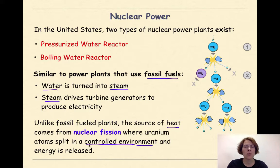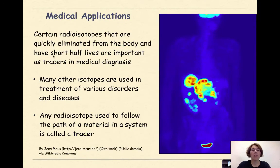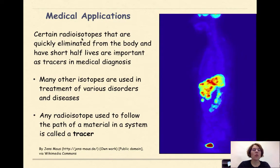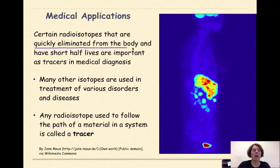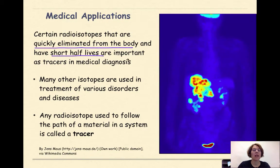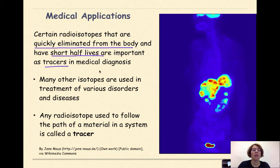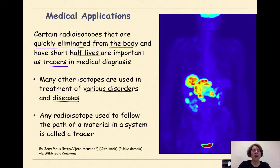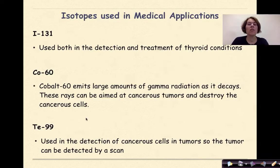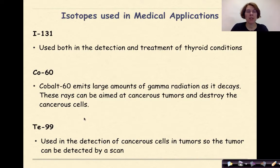Medical applications: certain radioisotopes that are quickly eliminated from the body and have short half-lives are important as tracers in medical diagnosis. Many other isotopes are used in the treatment of various disorders and diseases. Any radioisotope used to follow the path of material in a system is called a tracer.